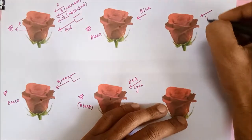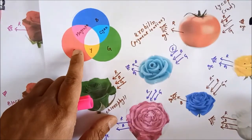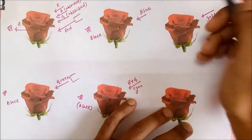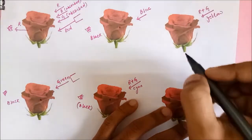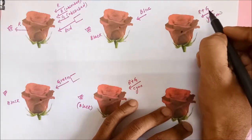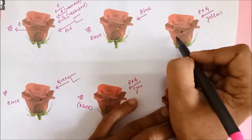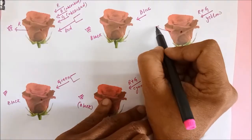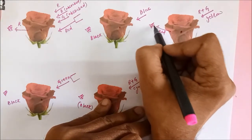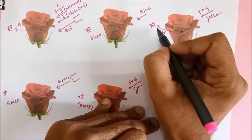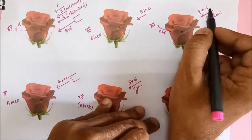Let us impart another secondary light — yellow. Yellow is made up of red and green. The pigments can absorb green color but they do not absorb red, so the red light gets reflected and reaches the eye. The red rose appears red in yellow light as well.